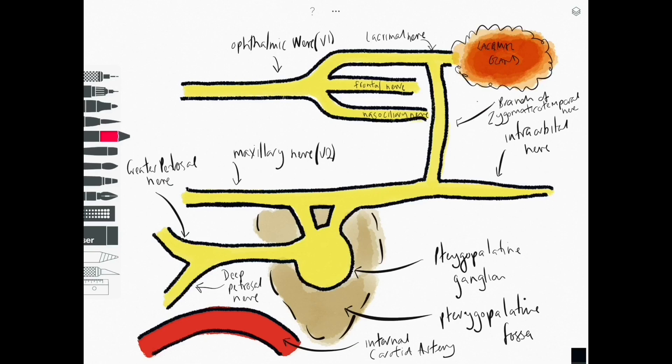They then reach the pterygopalatine ganglion and the fibers then eventually travel via a branch connecting the lacrimal gland with the maxillary nerve called the zygomaticotemporal nerve and this is how the nerves essentially get to the lacrimal glands by hitchhiking their way along those trigeminal nerve fibers.